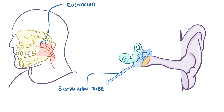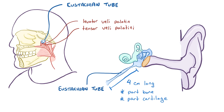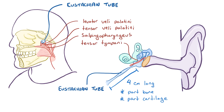In an adult, the eustachian tube is a roughly 4 cm long, part bone, part cartilage canal surrounded by four key muscles: the tensor veli palatinae, the levator veli palatinae, the salpingopharyngeus, and the tensor tympani. And it's those first two that help a lot with opening up the tube.